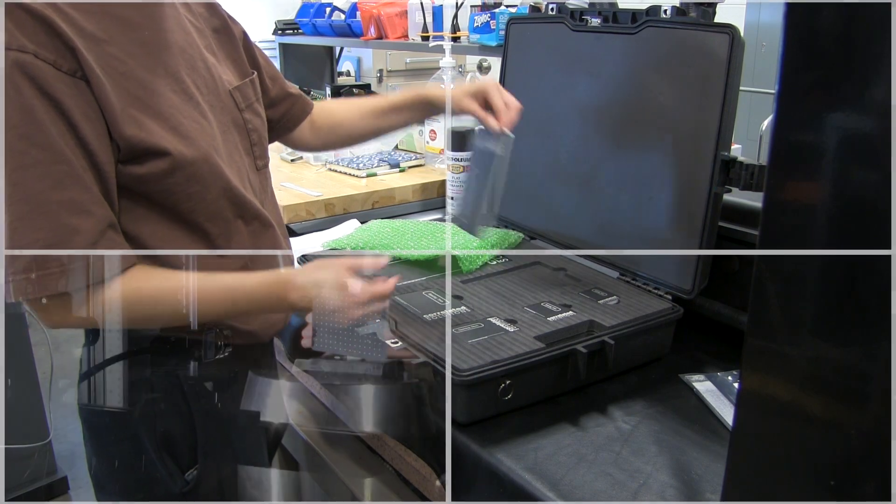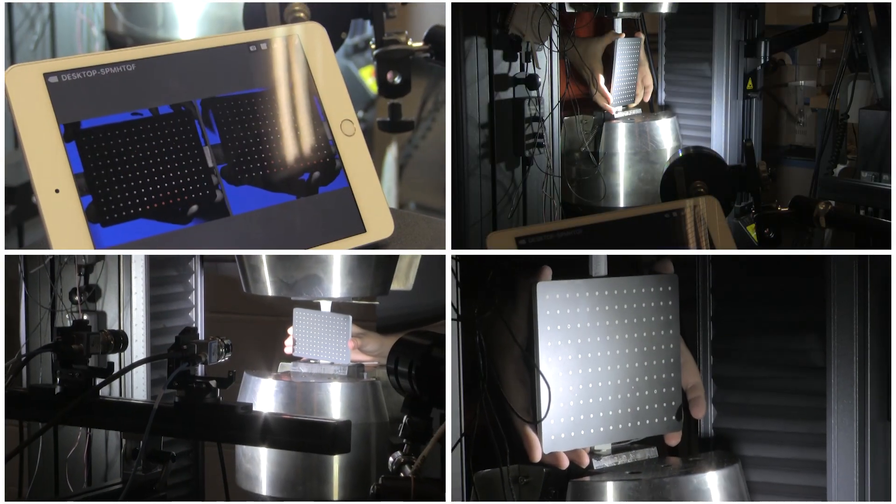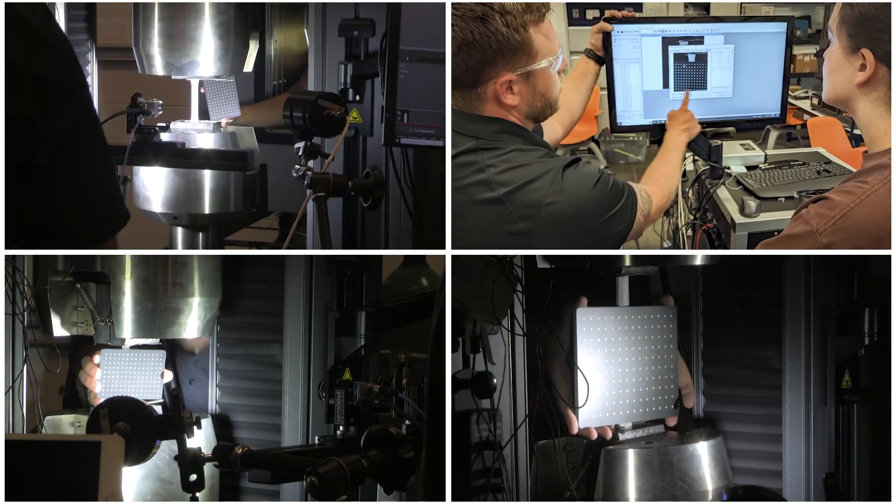Then, we'll cover how to choose a calibration target and achieve proper calibration of the stereo camera system using the VIC-SNAP image acquisition software.